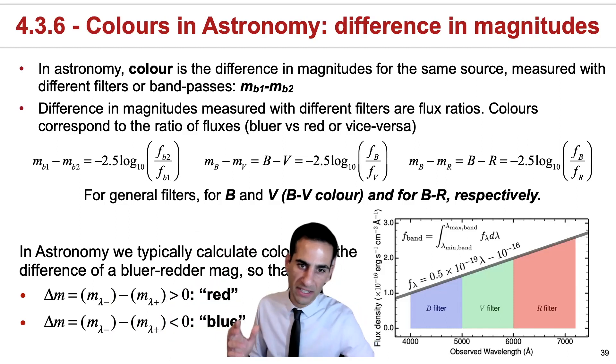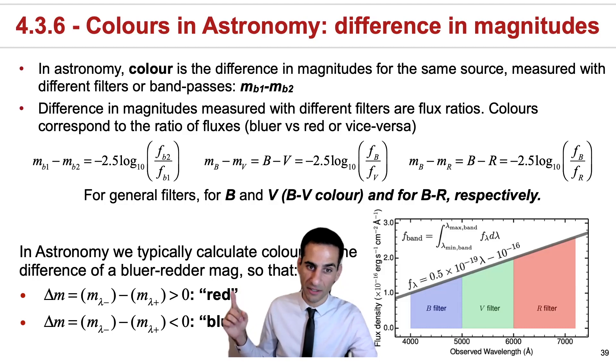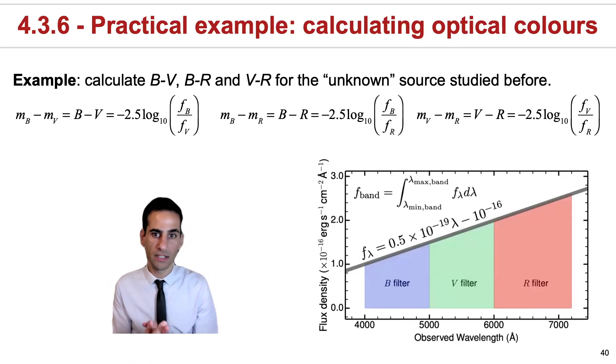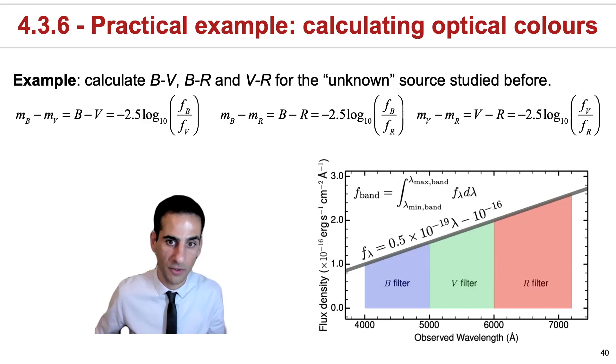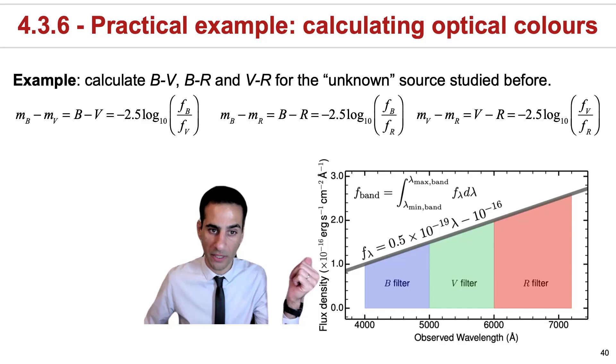When we say a source is red, it typically means the color is higher than zero when we define it this way. If an object is blue, the color is below zero. There's nothing like trying a specific example to see if you actually understood it, and you have this in your lecture notes. Let's go back to the source we're now familiar with.